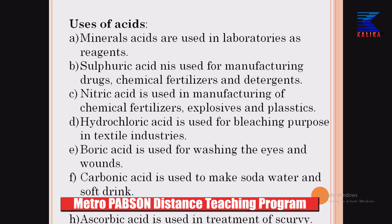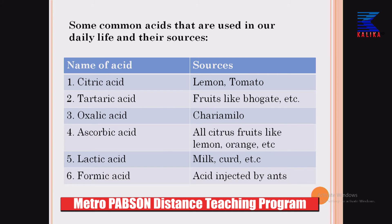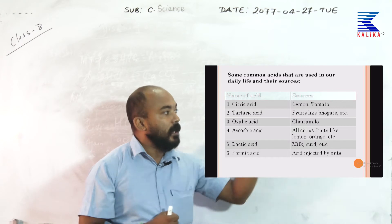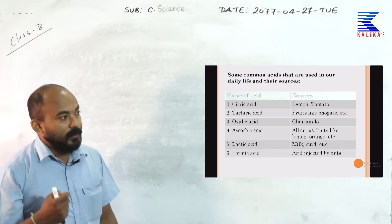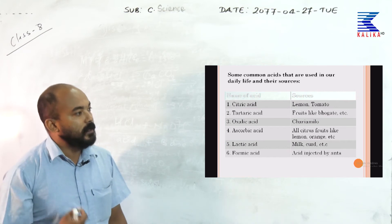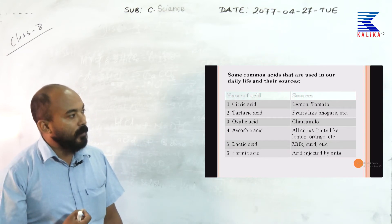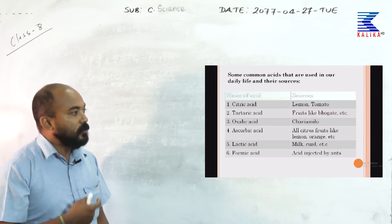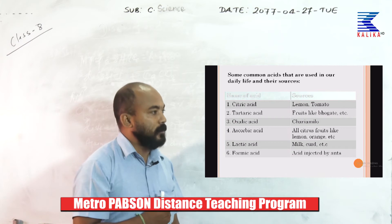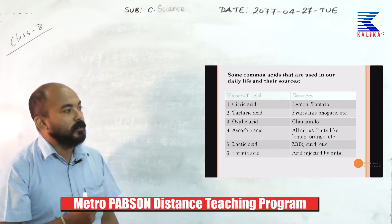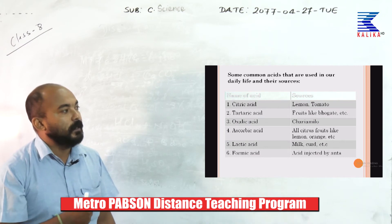Ascorbic acid is used for the treatment of the disease called scurvy. These are organic acids found in our daily food or used by human beings knowingly or unknowingly. For example, citric acid is found in lemon and tomato, which we use daily. All citrus fruits contain citric acid.